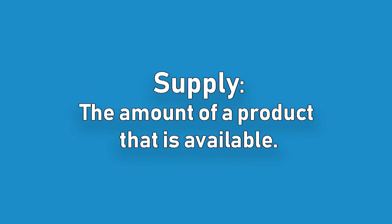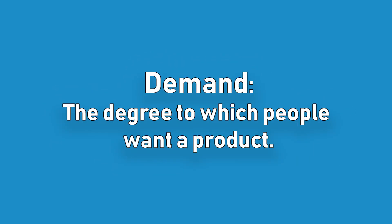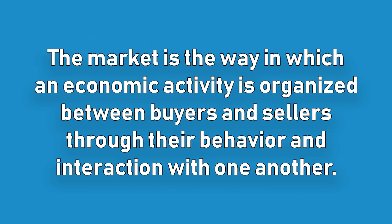The two basic terms used most often by economists are supply and demand. Supply is the amount of a product available and demand is the degree to which people want that product. Together, supply and demand make up a working market. The market is the way in which an economic activity is organized between buyers and sellers through their behavior and interaction with one another.